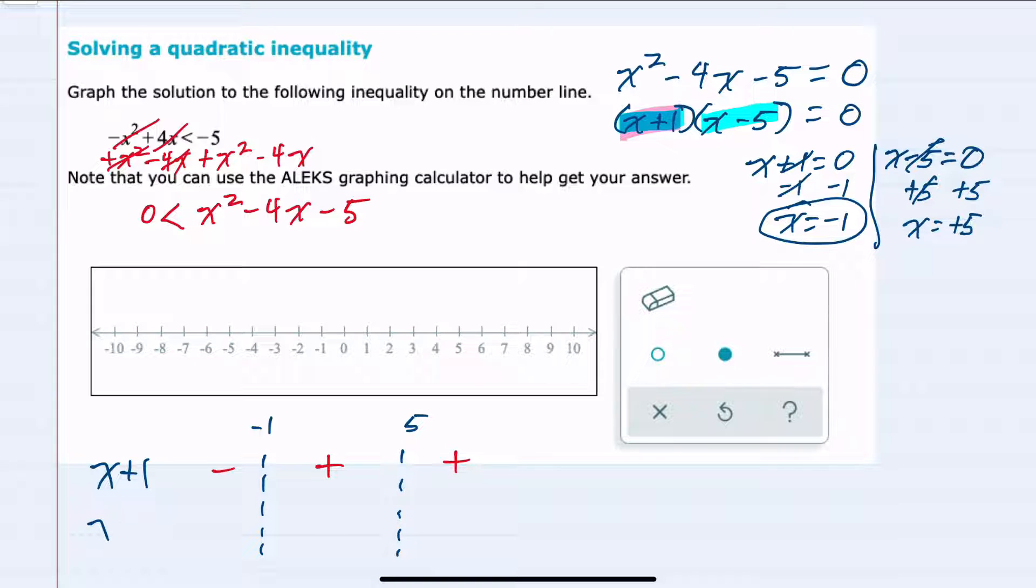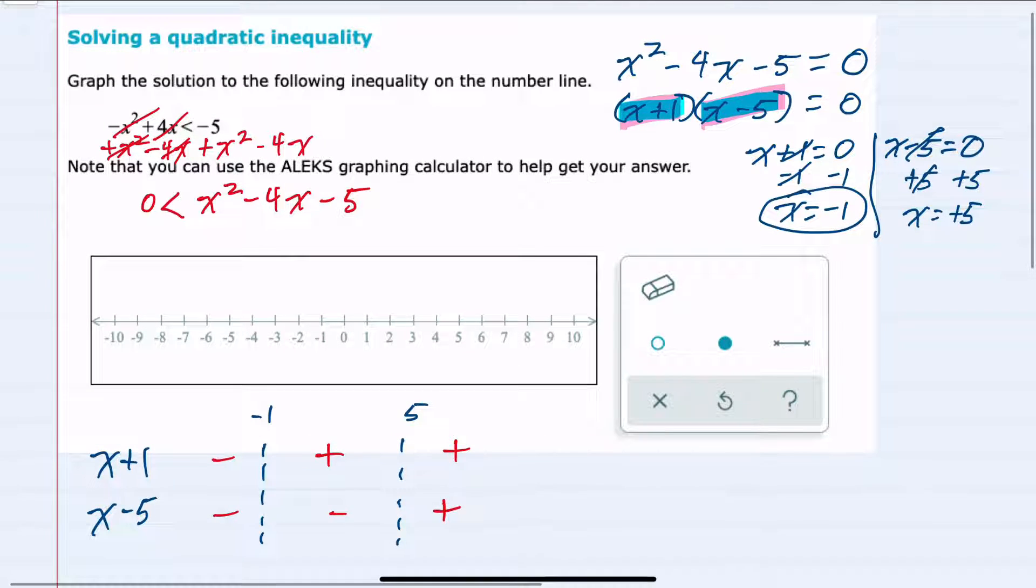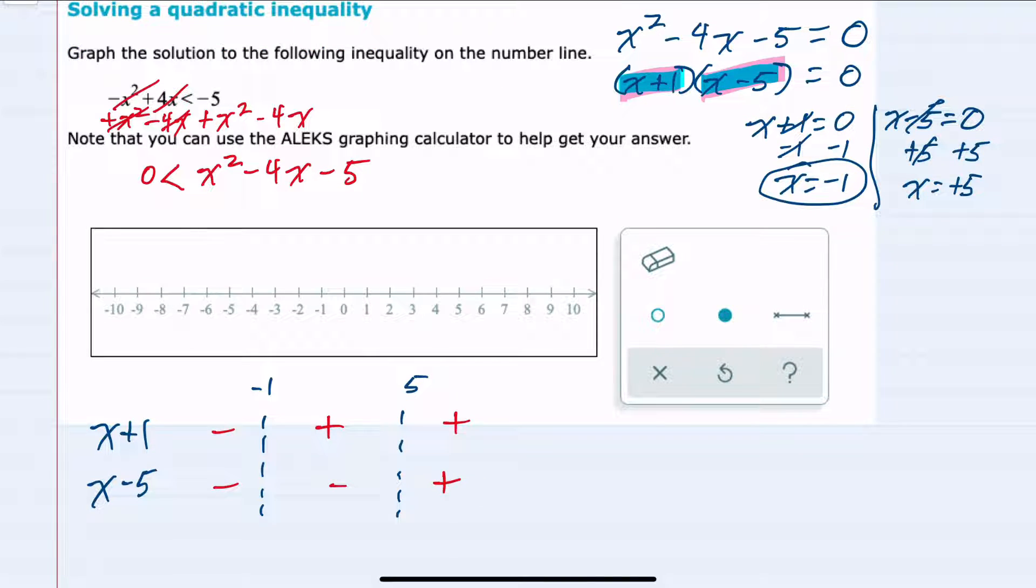Looking at the second factor, x minus 5, any value that I substitute greater than 5 would be positive, and any value less than 5 would be negative. Now that I've broken down where each one of those is positive or negative, since this inequality has them being multiplied...